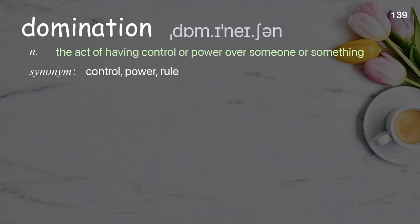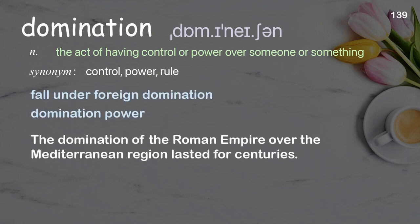Domination. The act of having control or power over someone or something. Examples: fall under foreign domination, domination power. The domination of the Roman Empire over the Mediterranean region lasted for centuries.